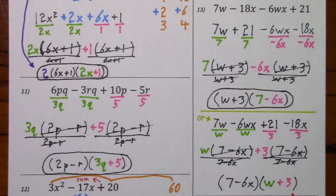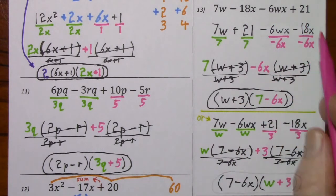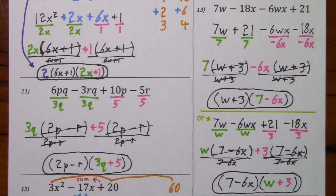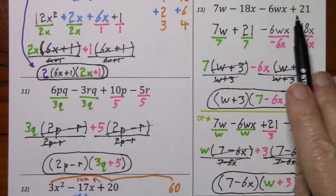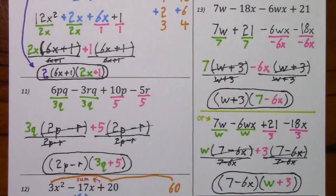I'll mention that I haven't shown the only two possible ways to rearrange these terms. So if your answer looks different from either of the two I've shown, just multiply what you have and you should be able to get the original four terms.